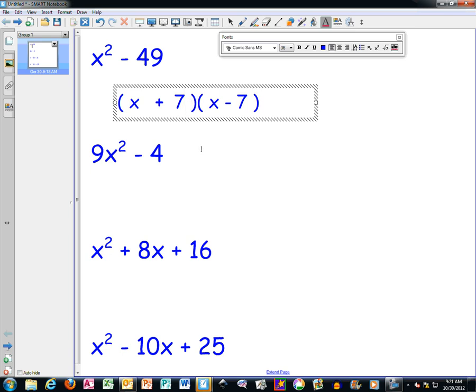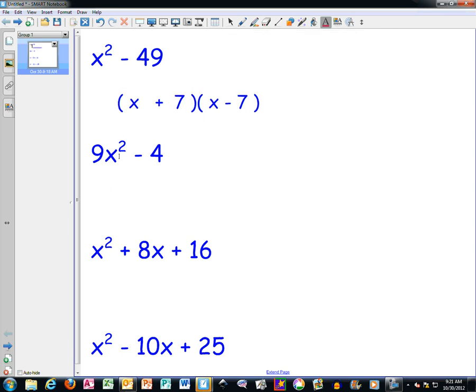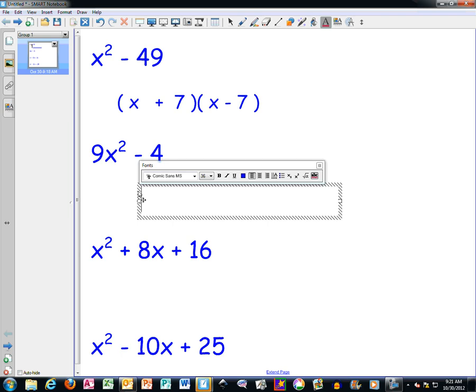The next example we have is the same concept. It's a little bit different, though, because it does have this 9x squared here. But if we think about the number 9, well, 9 is still a perfect square. So the way we're going to set this up again is we have our two parentheses. Within each set of parentheses, well, within one set we have a plus sign, and within the other set we have a minus sign.